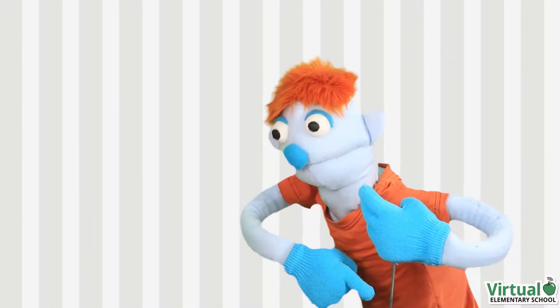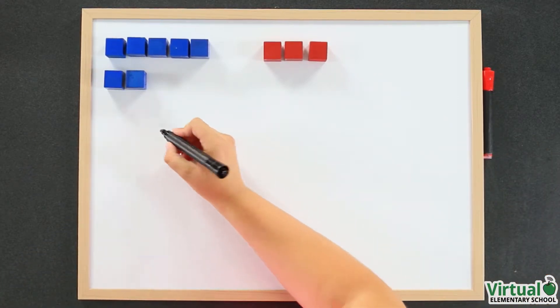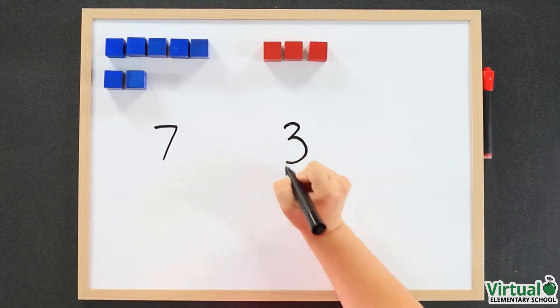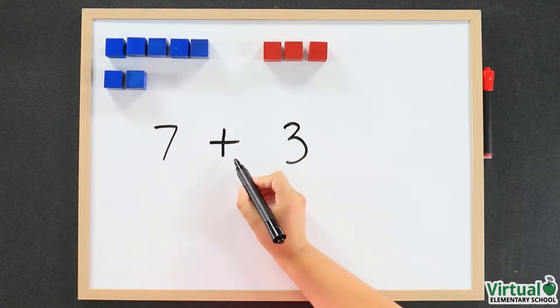I have seven blue blocks and three red blocks. Let's write down the numbers so we don't forget. To make this equation we need a symbol in between the two numbers we're adding.